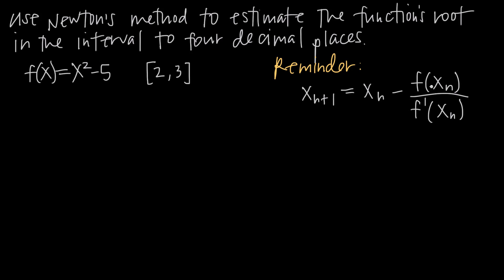This formula looks more complicated than it actually is. The first thing we need to do is pick a value x₀. This is difficult for a lot of people because how do you know what value to start your approximation with? Well, if you're given an interval like we are — the interval 2 to 3 — you could choose one of the endpoints of the interval, or you could choose something in the middle, like 2.5, which is halfway between 2 and 3.